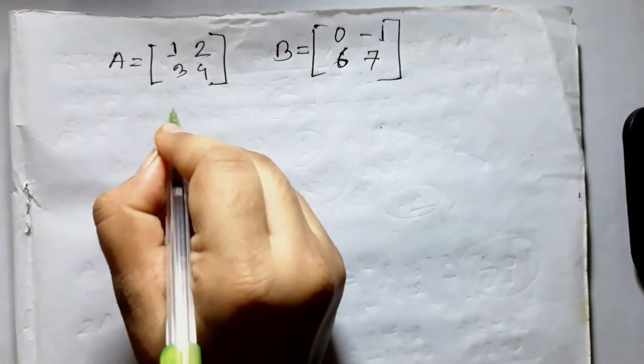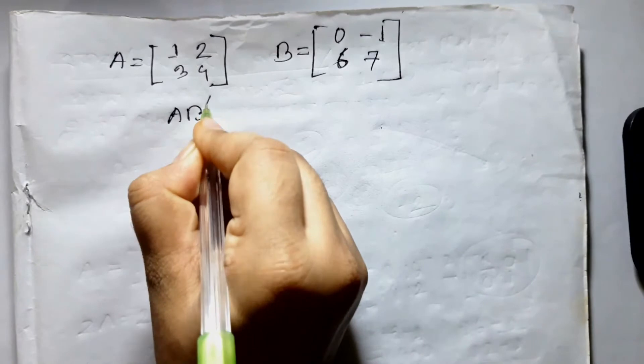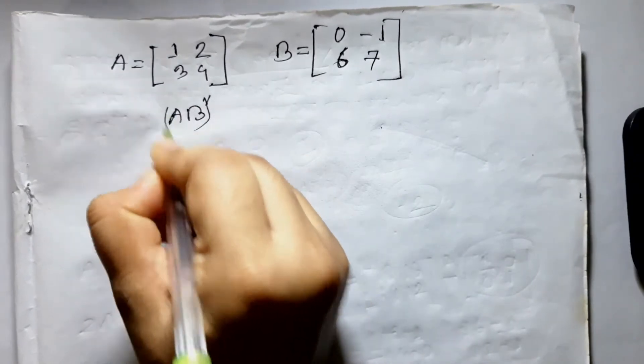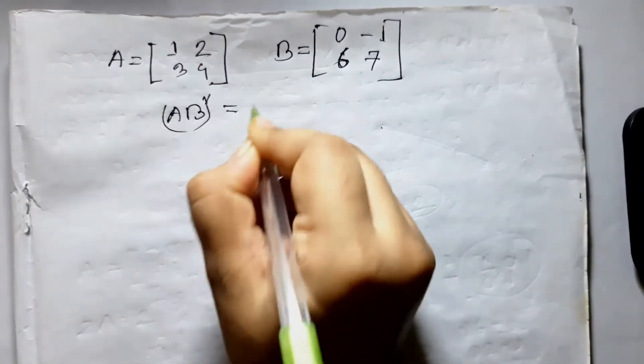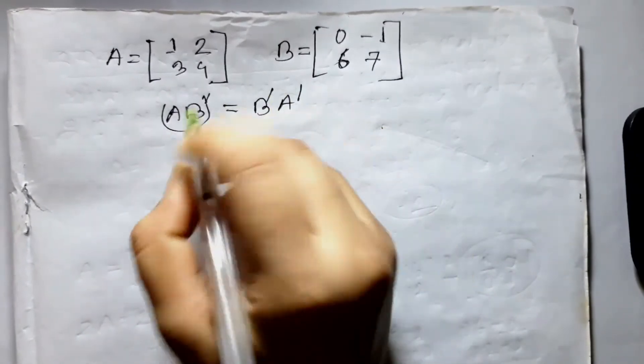So we go to a matrix here. A B prime is equal to B prime A prime.